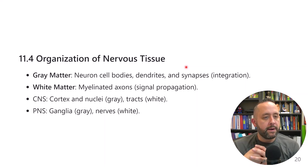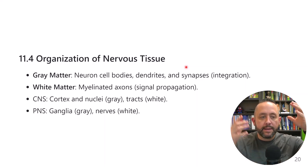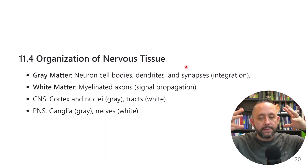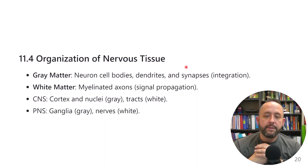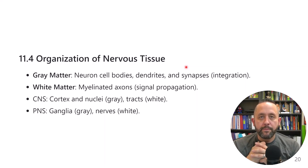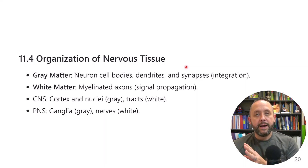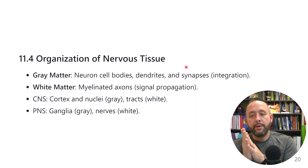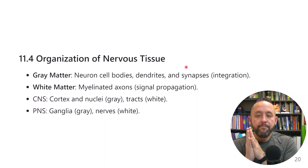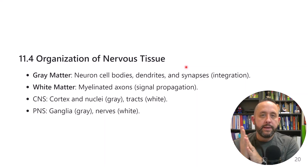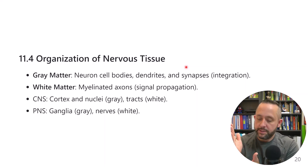Other terms: cortex refers to a layer — our brain has an outer cortex that provides higher executive functioning. A group of cells within the central nervous system is called nuclei. A group of neurons with the same function outside of the CNS is called a ganglion. Nerves out in the peripheral nervous system are going to be white — myelinated. So overall: gray matter is unmyelinated, white matter is myelinated.